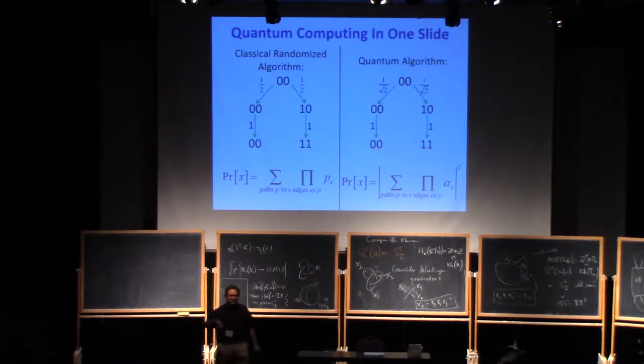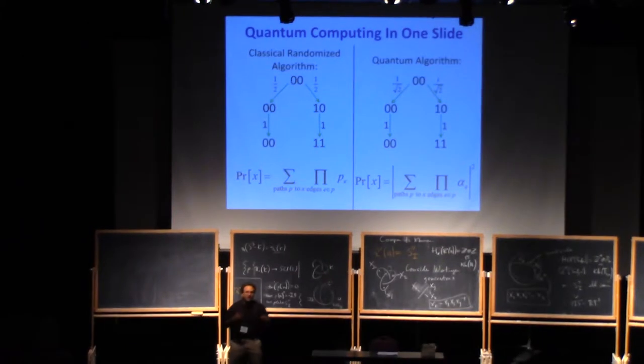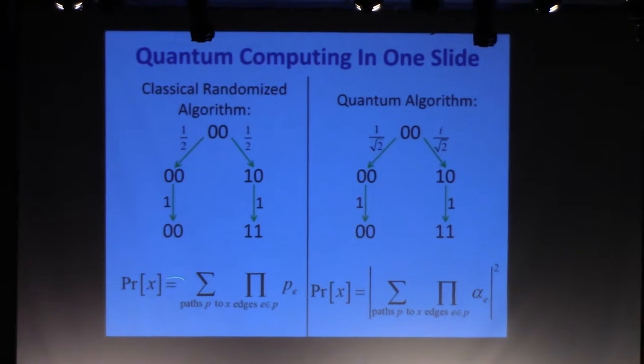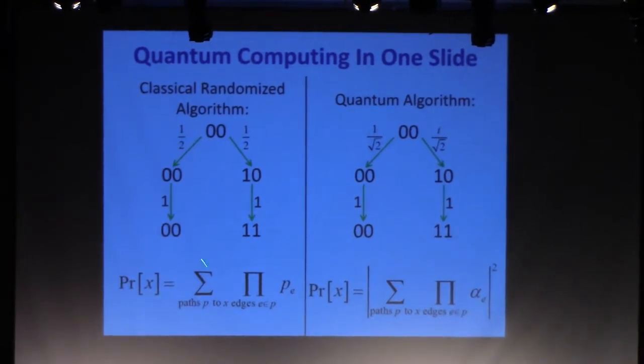Every operation that I do can be thought of as some linear transformation that I'm applying to this vector of length 2 to the n, representing the probabilities of all the possible states of my computer. At the end, I'll be interested in the probability that I see some particular string when I look at the computer. I just use the usual rules of probability. I can sum over all paths through this tree of possibilities that would lead to that outcome, and for each path, the probability is the product of the probabilities of the transitions along the edges.